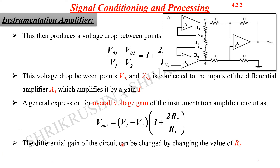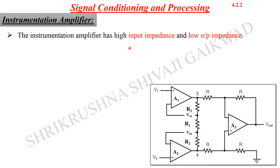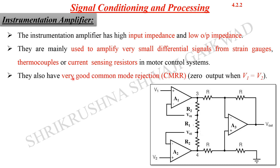The differential gain of the circuit can be changed by changing the value of R1, which is placed between the first stage of the two amplifiers. The instrumentation amplifier has a very high input impedance and very low output impedance. They are mainly used to amplify very small differential signals from strain gauges, thermocouples, or current sensing resistors in motor control systems. They also have a very good common mode rejection ratio, giving zero output when both voltages to the first stage are equal.